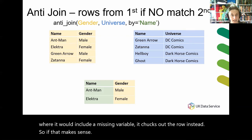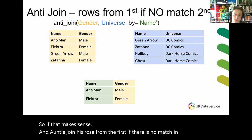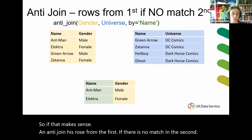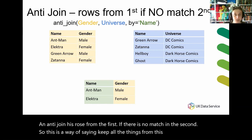An anti join returns rows from the first if there is no match in the second. So this is a way of saying keep all the things from this list if those things do not appear in the other.